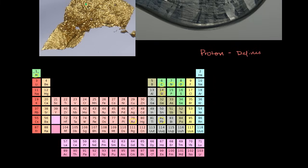So by definition, hydrogen has one proton. Helium has two protons. Carbon has six protons. You cannot have carbon with seven protons — if you did, it would be nitrogen. It would not be carbon anymore.